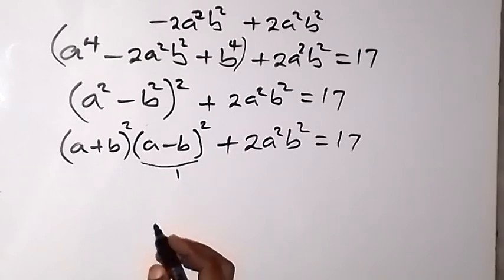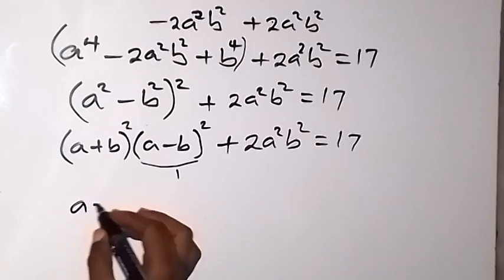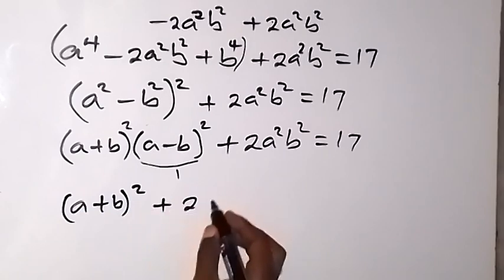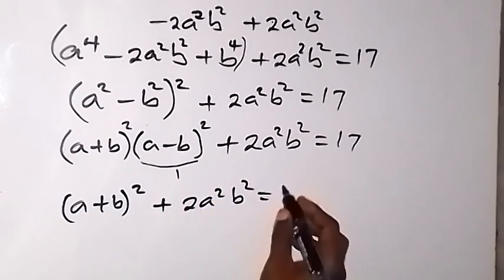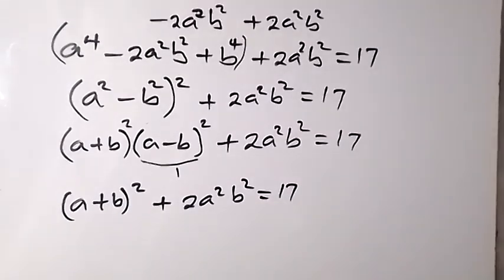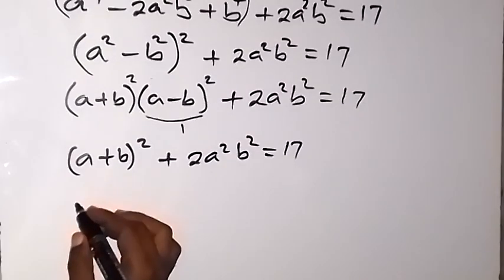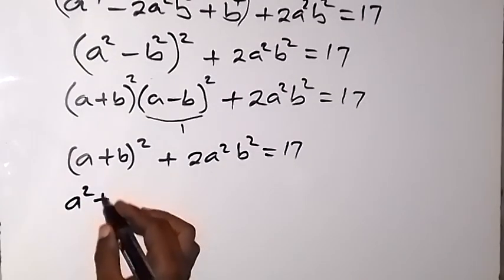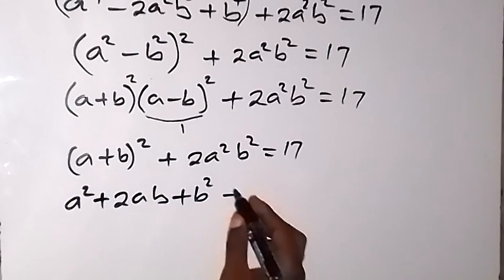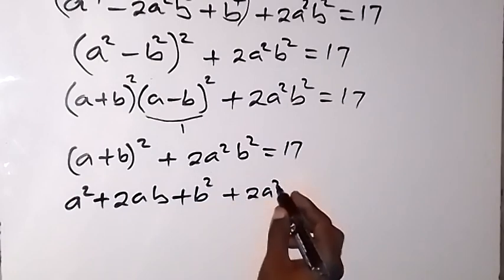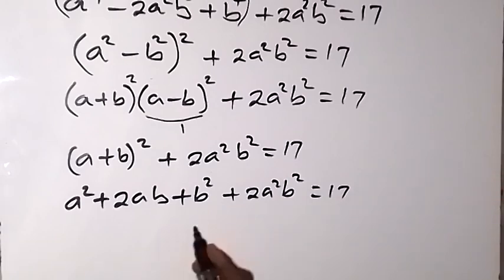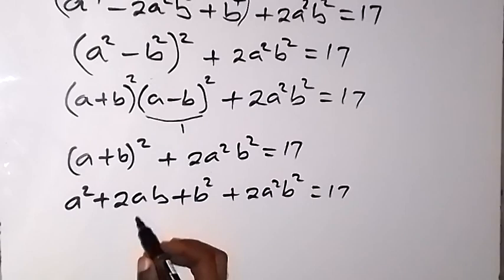Expanding (a+b)², we get a² + 2ab + b². So the equation is now a² + 2ab + b² + 2a²b² = 17.